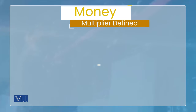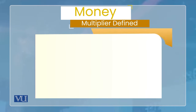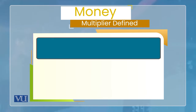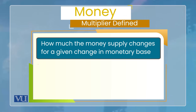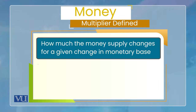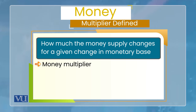پہلے ہم money multiplier کو define کریں: 'how much the money supply changes for a given change in monetary base' — یعنی monetary base change ہو جائے تو total money کتنی change ہوگی؟ جس ratio سے وہ multiple ہو وہ money multiplier ہے۔